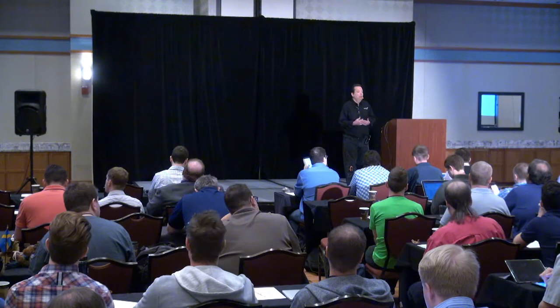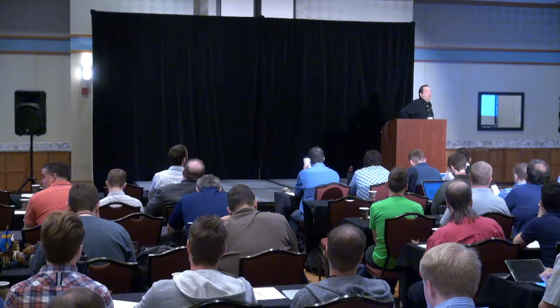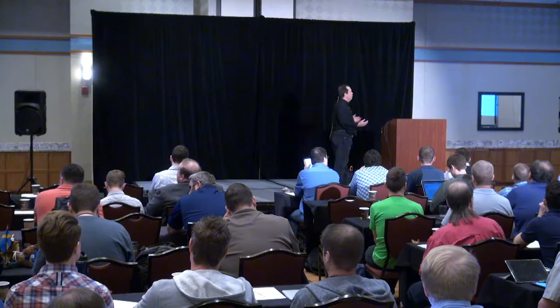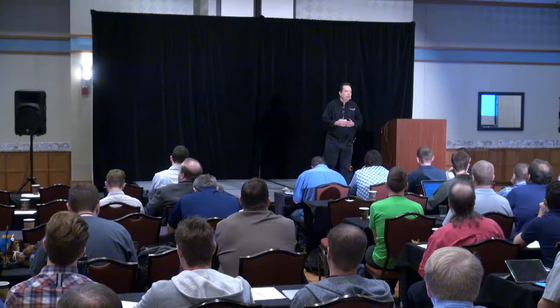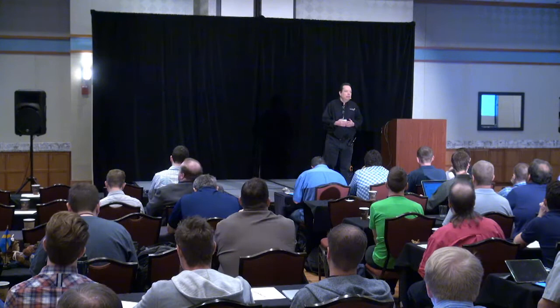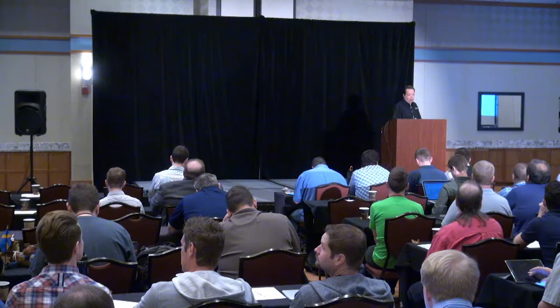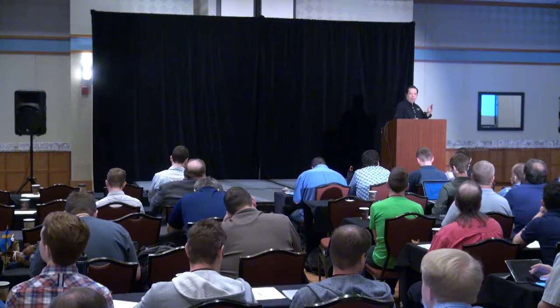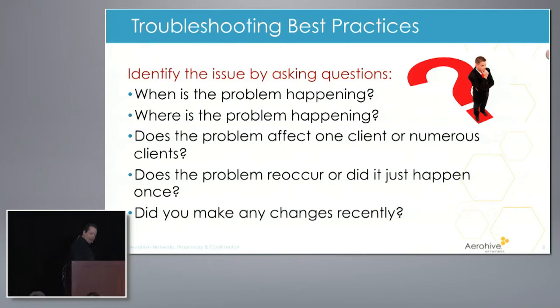Does the problem reoccur, or did it just happen once? How do you replicate the problem? One of my big pet peeves is people don't have their NTP settings correct, or their clock settings correct on their access points, because when you're trying to troubleshoot a problem, the log files are showing 1970. If you don't have accurate time settings on your access points and controllers, it's just common sense. And here's the best one: did you make any changes recently? Almost always they're going to say no, and usually you find out that they did.